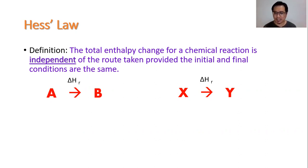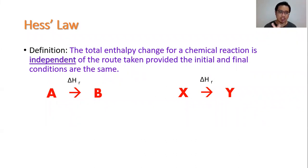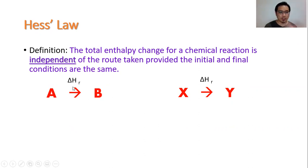The definition states that the total enthalpy change for a chemical reaction is independent of the route taken, provided the initial and final conditions are the same. So the total enthalpy change is independent of the route taken, provided that the initial reactants and the final products are the same. A reaction could progress in one single step or in multiple steps — as long as the reactants and products are the same, the total enthalpy change will be the same.